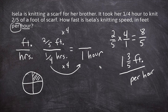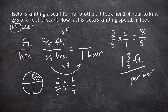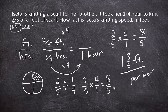There is another way we could have approached this problem. Whenever you have a given rate, simply take the numerator and divide by the denominator to convert it to a unit rate. We take two-fifths and divide by one-fourth, then keep two-fifths, change division to multiplication, and write the reciprocal of one-fourth. That still gives us eight-fifths, which equals one and three-fifths feet per hour.